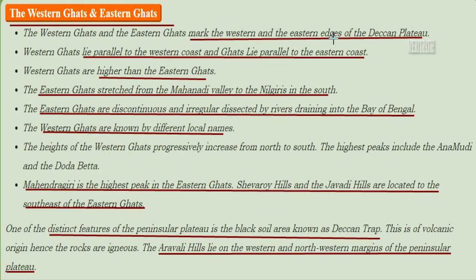The Western Ghats and Eastern Ghats mark the western and eastern edges of the Deccan Plateau respectively. Western Ghats lie parallel to the western coast and are higher than the Eastern Ghats. The Eastern Ghats stretch from the Mahanadi Valley to the Nilgiris in the south, and are discontinuous and irregularly dissected by rivers draining into the Bay of Bengal. The Western Ghats are differently known by local names, and their height progressively increases from north to south. The highest peaks include Anamudi and Doddabetta.